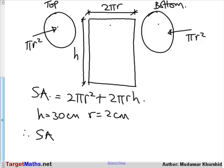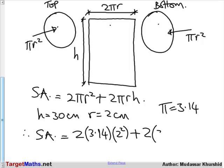So, it's 2 times 3.14 times radius squared, which is 2 squared, plus 2 times π, 3.14 times radius, which is 2 times h, which is 30.